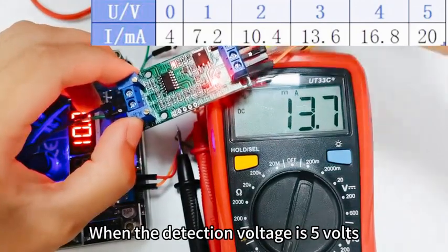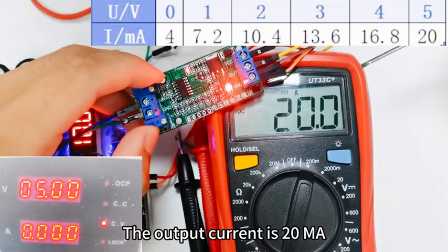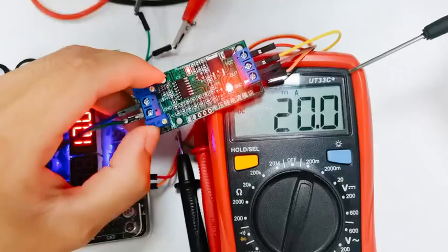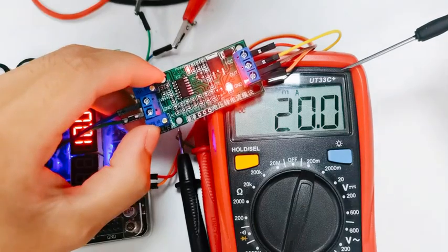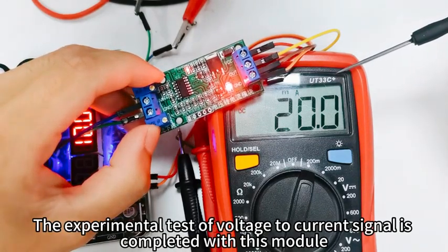When the detection voltage is 5 volts, the output current is 20mA. It can be seen that 0 to 5 volts voltage to 4 to 20mA current energy output. The experimental test voltage to current signal is completed with this module.